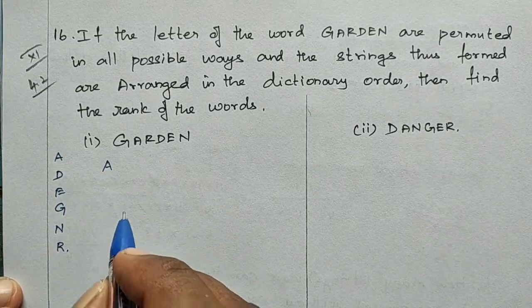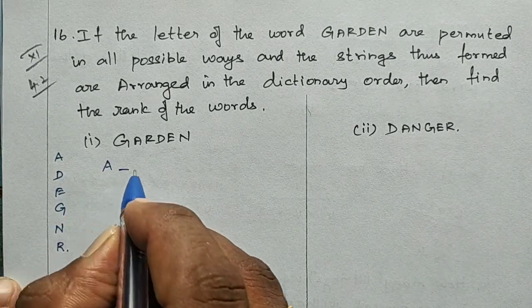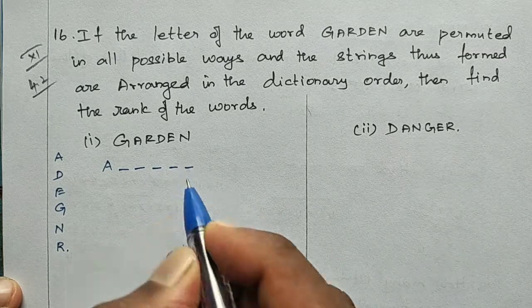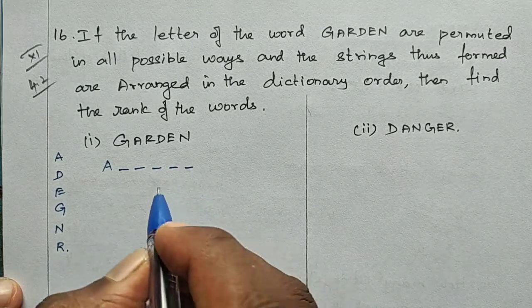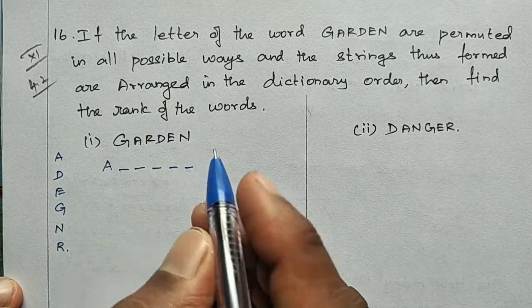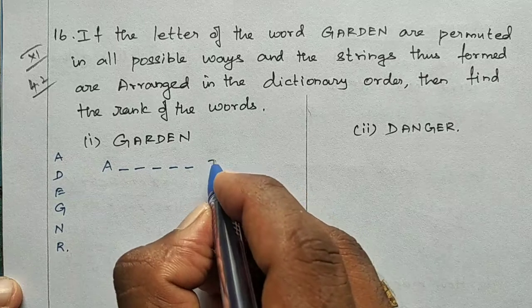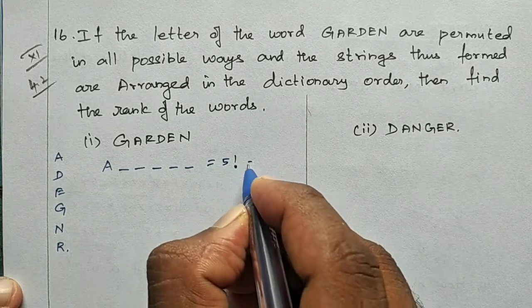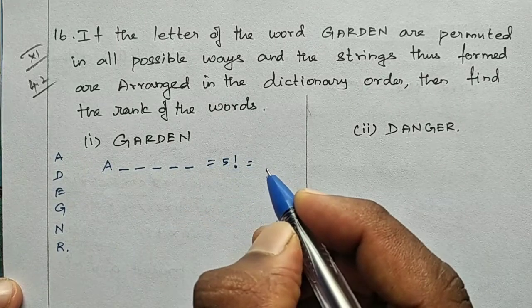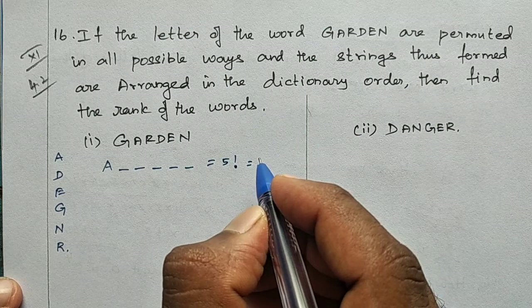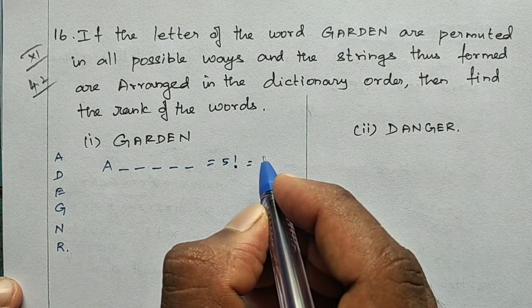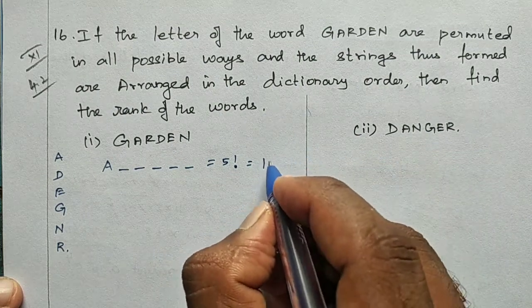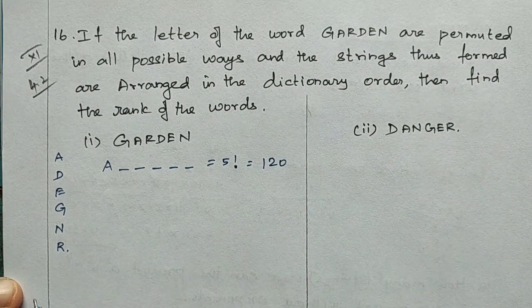There are 6 letters total, so 5 remaining letters give 5 factorial arrangements. 5 factorial = 5 × 4 × 3 × 2 × 1 = 120. So each starting letter accounts for 120 words.